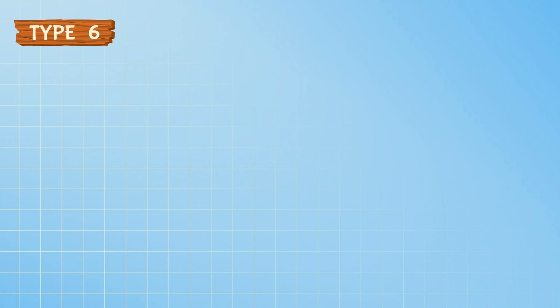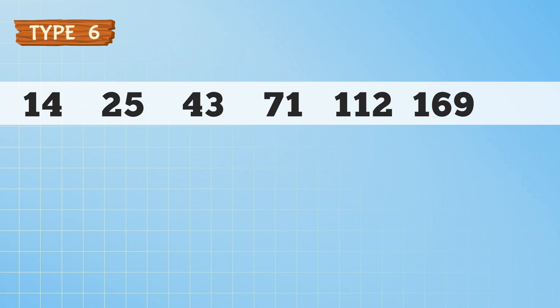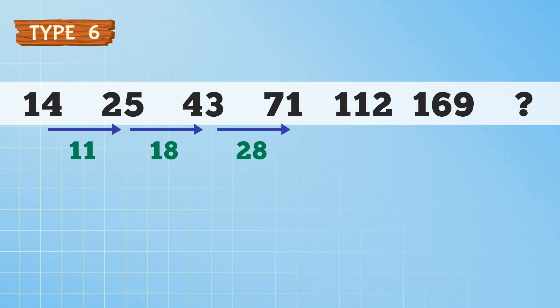Type 6 — the series: 14, 25, 43, 71, 112, 169, question mark. Try to find the differences between the numbers: the first difference is 11, then 18, 28, 41, 57. Is there a pattern here? No. Let's call these numbers level 1 and try to find the differences between them: 7, 10, 13, 16.